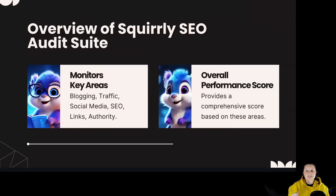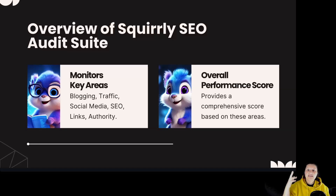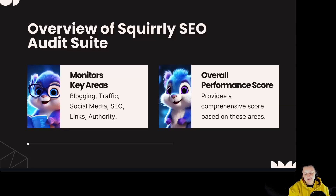Overview of Squirly SEO audit suite: it covers six main areas — blogging, traffic, social media, SEO, links, and authority — giving you a complete picture of your site's performance. It helps in making informed decisions based on real data and also provides a comprehensive score based on those areas.